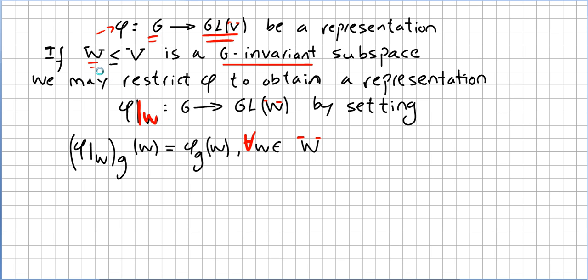Now, we know that W, the subspace, is G-invariant. So since W is G-invariant, we know that phi g of W will be in the subspace.